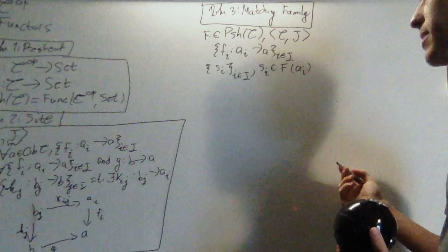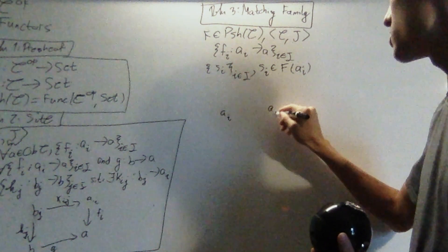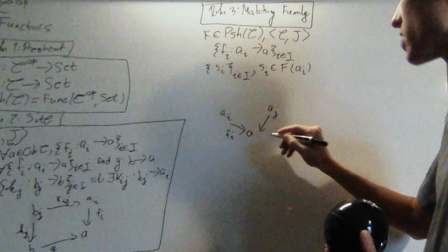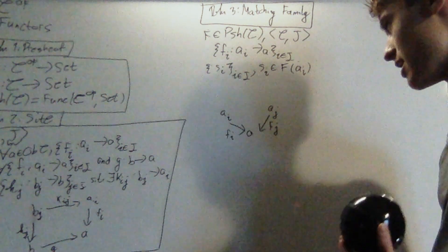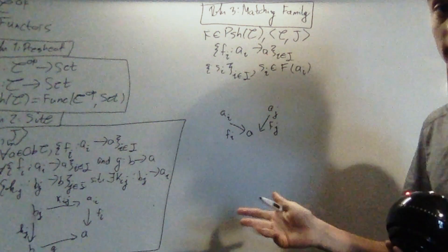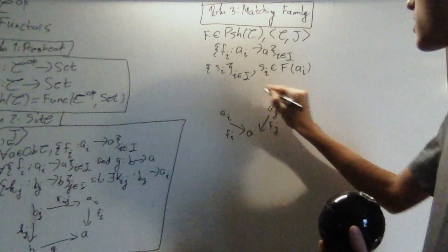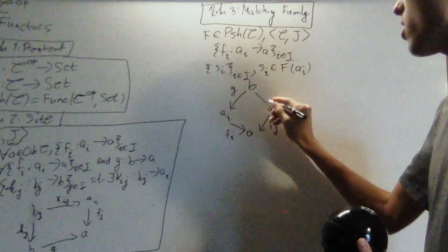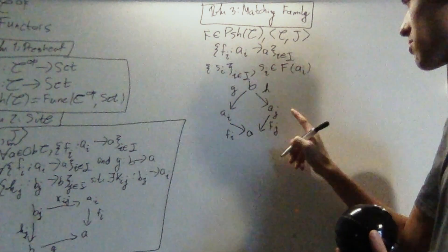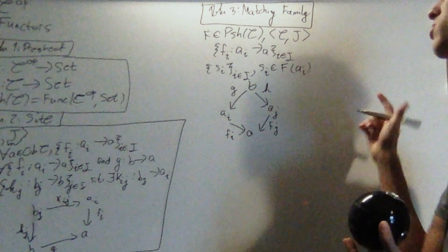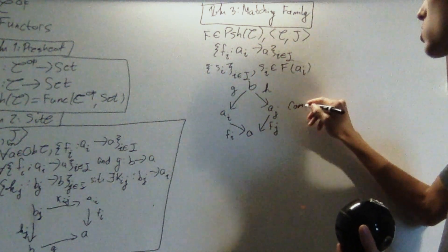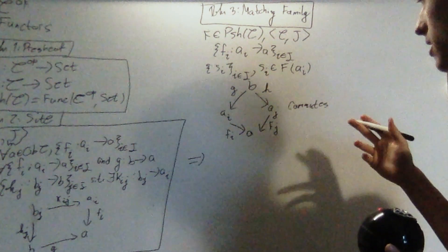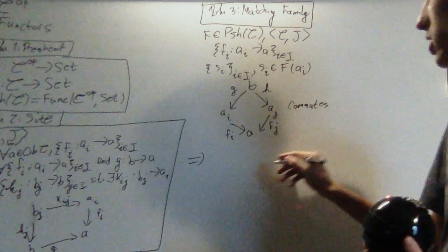To give an intuitive diagram: we have A_i and A_j, both mapping down to A via f_i and f_j from the covering family. To complete this diagram and define what a matching family is, I'll add another object B with two morphisms — one taking B down to A_i via g, and another taking B to A_j via h. This diagram does not necessarily have to commute, but if it does, we get a nice property.